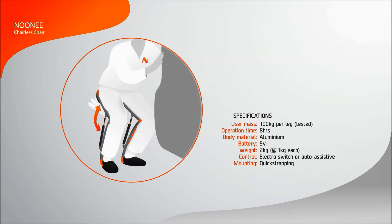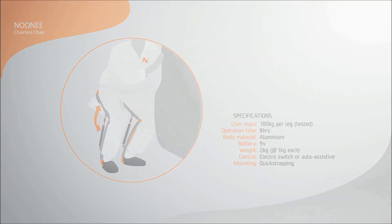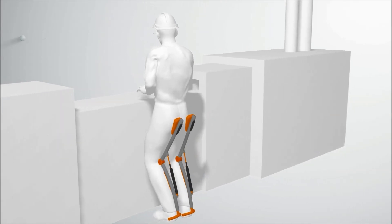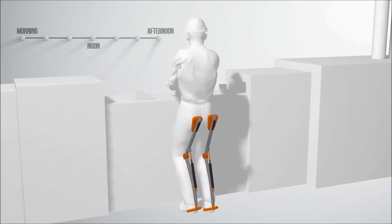The chairless chair carries your body weight, thereby relieving the stress on your leg muscles and joints when you need it. It is not heavy. You wear it, you walk with it. You move into the desired pose, activate it, and benefit from the provided support.